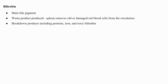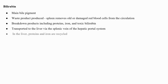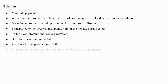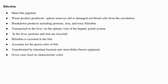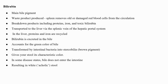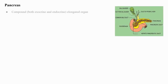These breakdown products — including proteins, iron, and toxic bilirubin — are transported to the liver via the splenic vein of the hepatic portal system. In the liver, proteins and iron are recycled whereas bilirubin is excreted in the bile, accounting for the green color of bile. Bilirubin is eventually transformed by intestinal bacteria into stercobilin, a brown pigment that gives stool its characteristic color. In some disease states, bile does not enter the intestine, resulting in white or clay-colored stool with high fat content since no fats are broken down or absorbed.